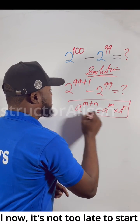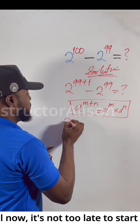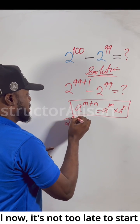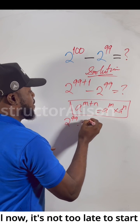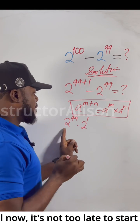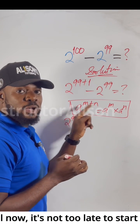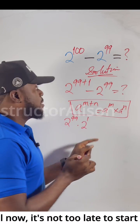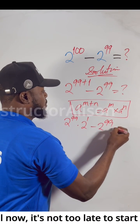If you are applying this particular law to this point, we should have 2 to the power of 99 times 2 to the power of 1. After all, when the bases are the same, we add the powers. So, minus 2 to the power of 99.